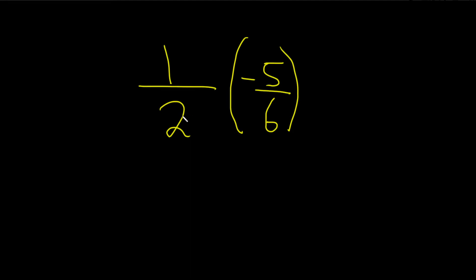In this problem, we have to multiply 1/2 times negative 5 over 6. We know it's times because there's no symbol here. Whenever you have two fractions like this next to each other, the operation is assumed to be multiplication.